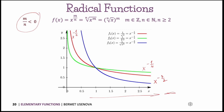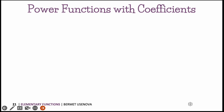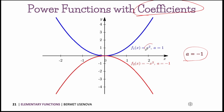This is how radical functions and monomials look like. Next we move to power functions with coefficients. We already know how different power functions look; now we look at how a coefficient changes the graph. For example, with coefficient a = −1: this is our parabola x squared with a = 1. If we change it to −1, the parabola ends up looking like this — it reflects the graph about the x-axis, flipping it to the opposite direction.